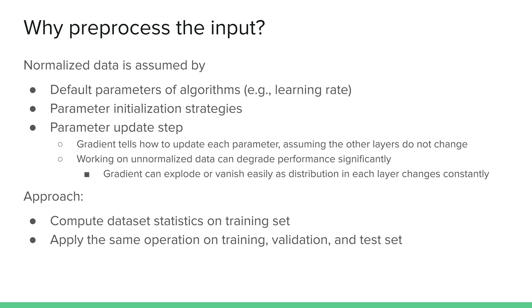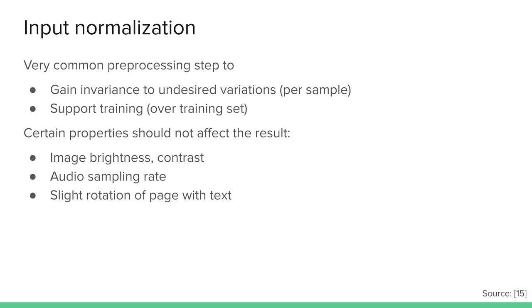The basic approach is to compute statistics on your training set, then apply that same operation to the training set, validation set, and test set. Input normalization is one of the most common and important pre-processing steps. It helps us gain invariance to undesired variations per sample — so if an image is slightly brighter or darker, that variation shouldn't affect what we're trying to achieve. Normalizing the entire training set makes it look more homogeneous and supports the training process.